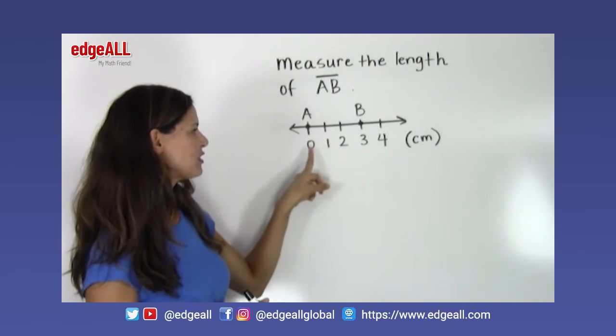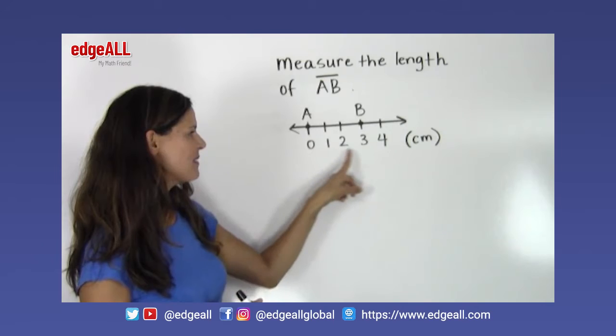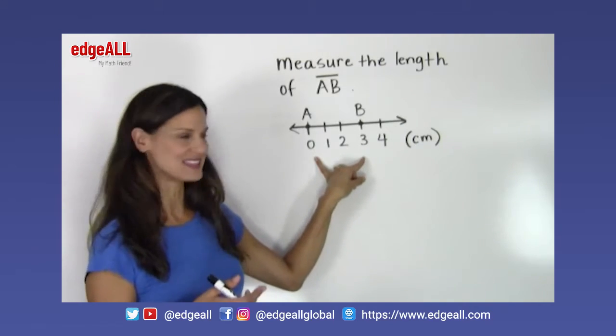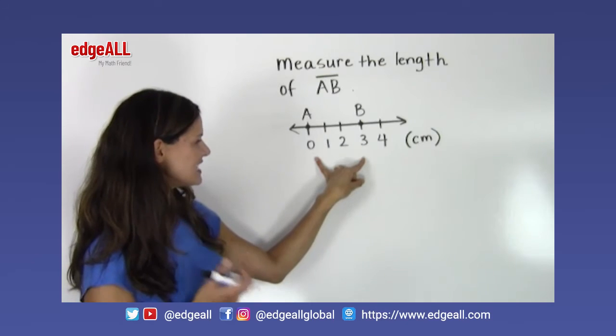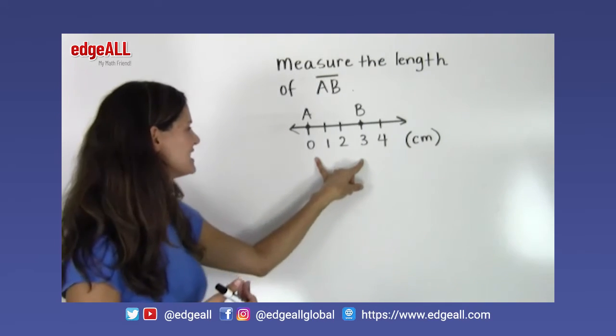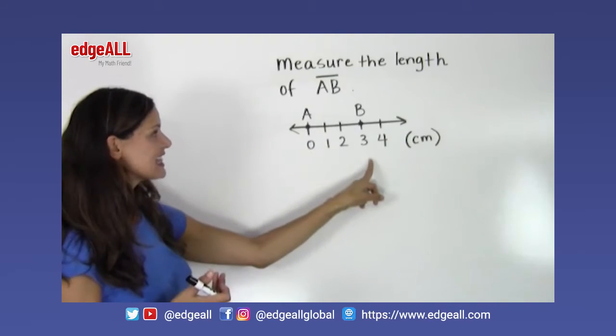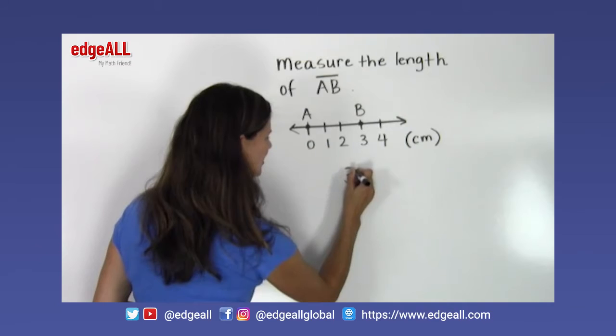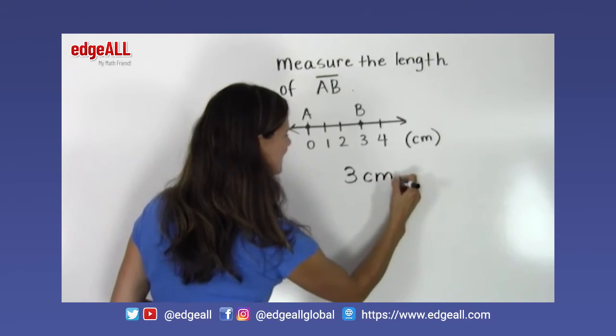And so there are three spaces between them. And this means that the length is three spaces long. And since each space is equal to one centimeter, we can see then that the length of line segment AB is equal to three centimeters.